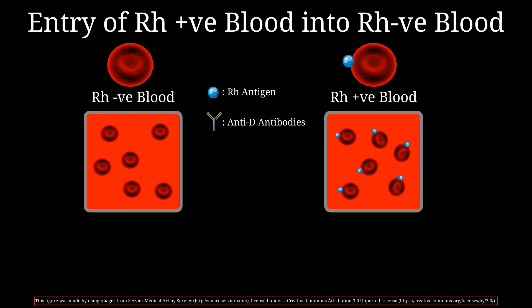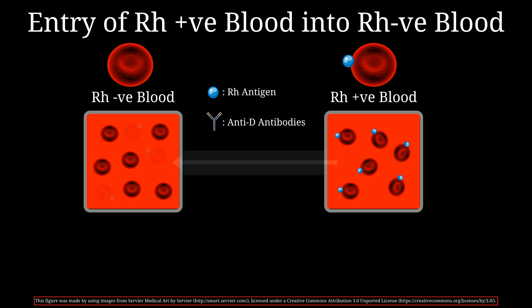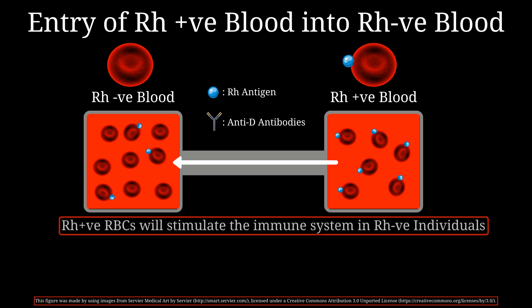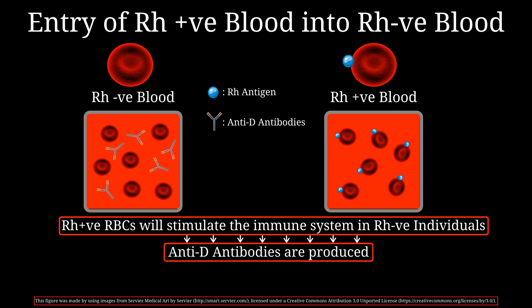In order for them to develop these antibodies, which are called anti-D antibodies, they have to first get sensitized. This can happen at any point throughout their life, should they ever require a blood transfusion, become pregnant, or experience any other event that introduces RH positive blood into their system. Their immune system will treat the RH antigens on those red cells as foreign and mount an immune reaction against them, producing anti-D antibodies.